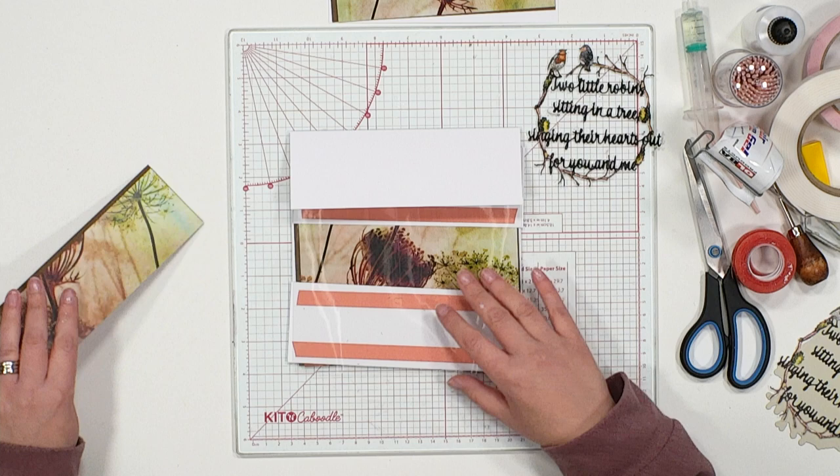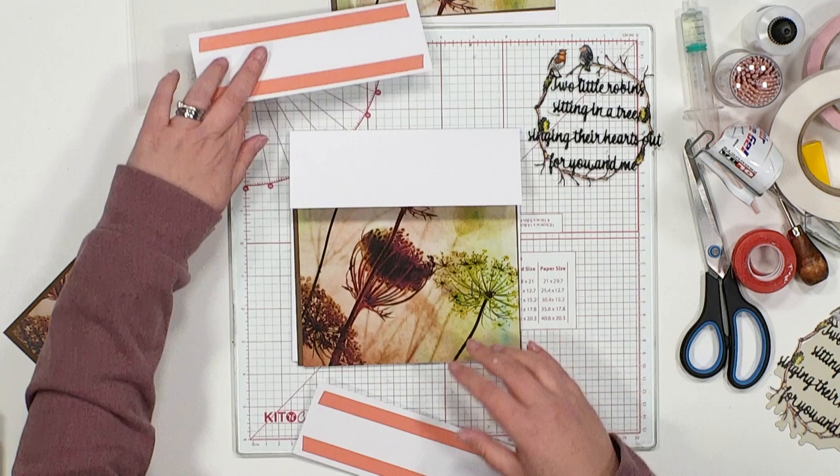Here, what we have, I'm going to just take away my layers just so it doesn't get confusing, is essentially a card blank, which I have snipped into.